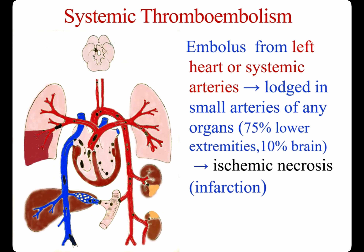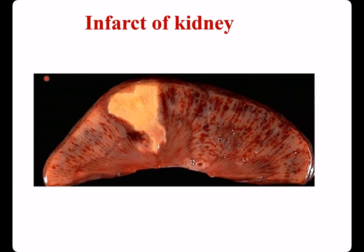Emboli arise from the left heart or systemic arteries, pass through the arterial bloodstream, and lodge in small arteries of any organ: 75% to the lower extremities, 10% to the brain, finally causing ischemic necrosis — infarction. This image shows infarction of the kidney.